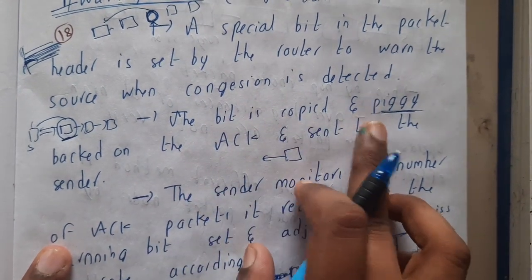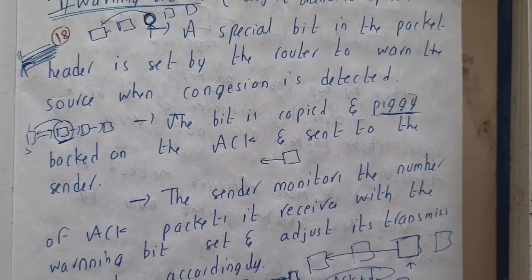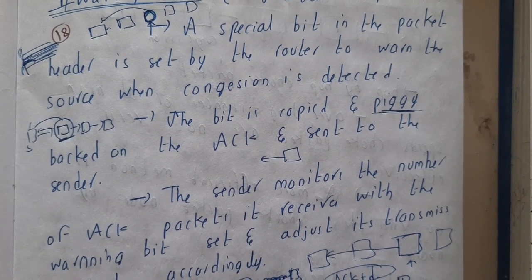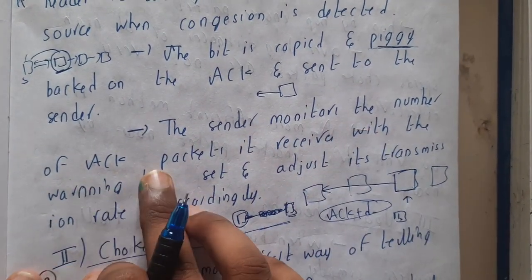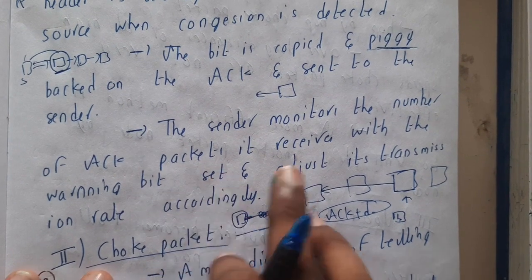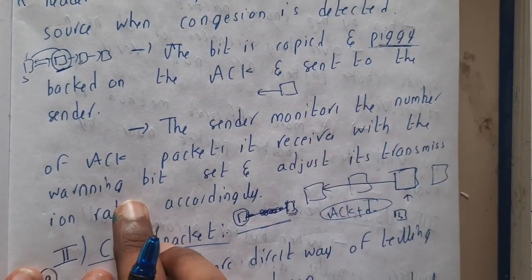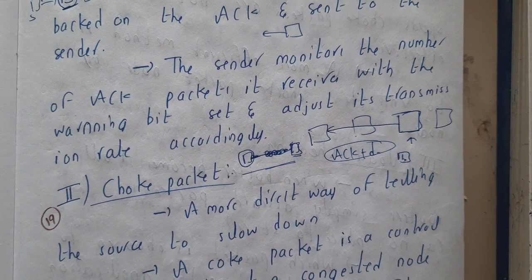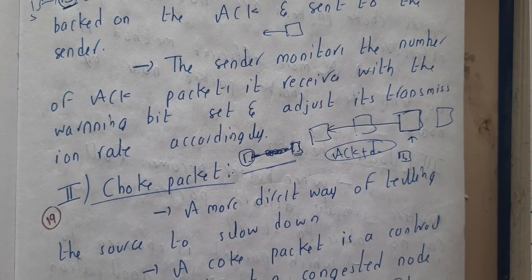The bit is copied and piggybanked — piggybanking means data plus acknowledgement combined together. The sender monitors the number of acknowledged packets it receives with the warning bit set, and adjusts its transmission rate accordingly.